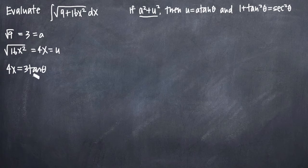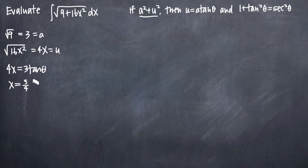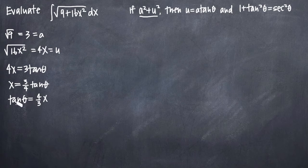We're now at the beginning of the setup part of our problem. There are several things we want to solve for before we jump into a trigonometric substitution problem, which will make the rest of the problem smoother. Starting with our substitution identity, we always want to solve for x first — dividing both sides by 4 gives us x equals 3 fourths tangent theta. We also always want to solve for tangent of theta, so dividing both sides by 3 gives us tangent theta equals 4 thirds x.